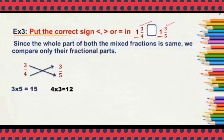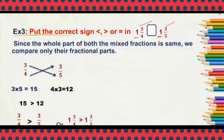4 times 3 will be 12. When you compare between 15 and 12, which is greater? 15 is greater than 12. So here 3 by 4 is greater than 3 by 5, or we can also say 1 and 3 by 4 is greater than 1 and 3 by 5. Students, hope you understood how to compare unlike fractions by cross multiplication method.